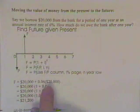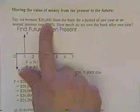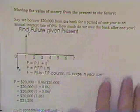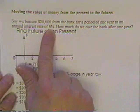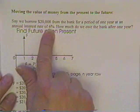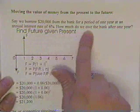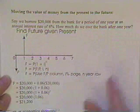Now, let's assume that we have borrowed $20,000 from the bank for a period of one year. They are requiring us to pay an interest rate compounded at the end of each year of 6%. The question is, how much do we owe the bank after one year?